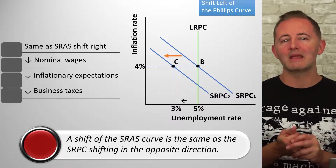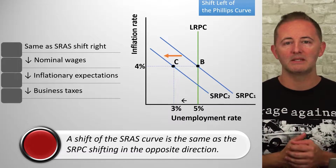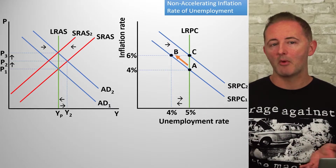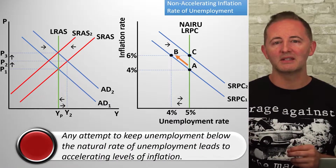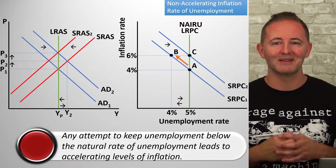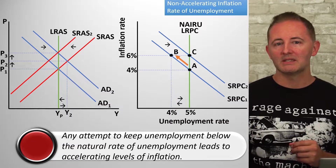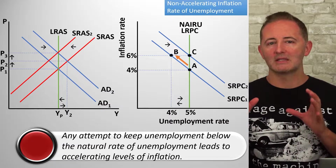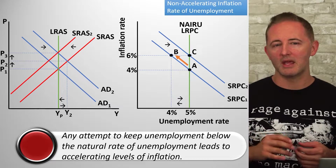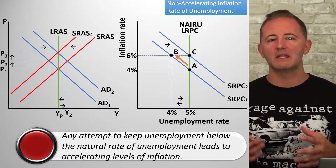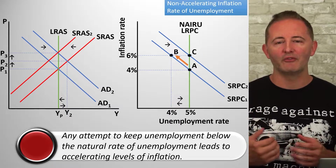We're thinking of things like inflationary expectations, nominal wages, inputs, productivity, and government policies toward businesses. The LRPC is also known as the NAIRU, or the Non-Accelerating Inflation Rate of Unemployment. When we're on the LRPC, since actual inflation equals expected inflation, as long as policymakers don't do anything else, inflation will stay right where it is. Attempts to keep unemployment below the natural rate will only lead to accelerating levels of inflation.